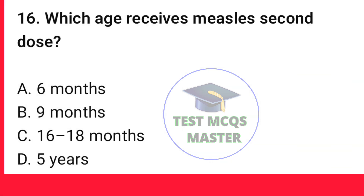Question number 16. Which age receives measles second dose? The correct option is C — 16 up to 18 months.